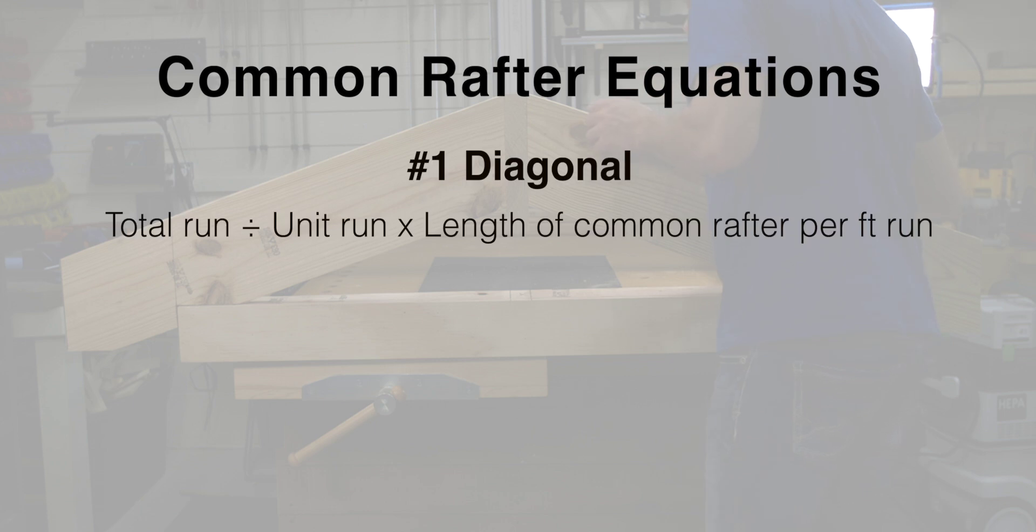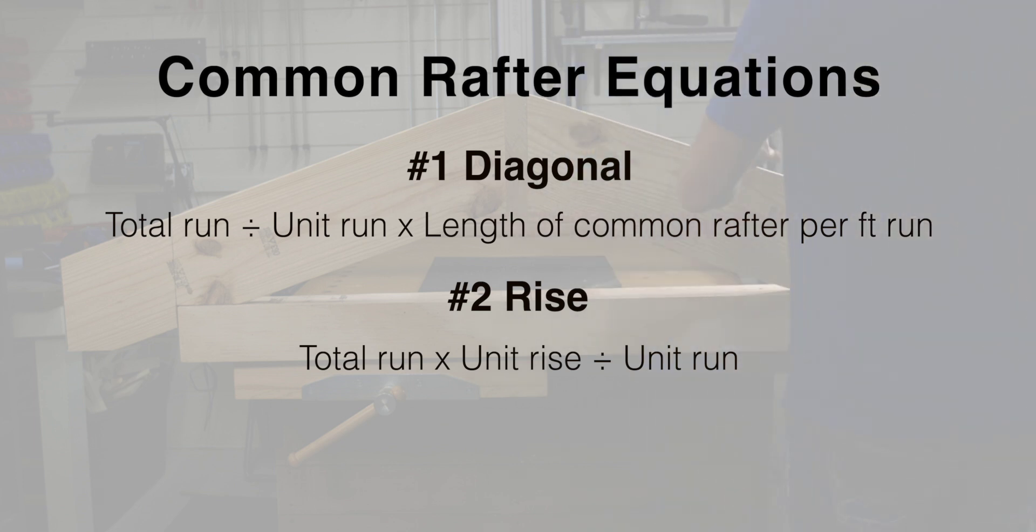In order to know the total height of a roof and the length of the rafters, you need two equations. The first equation is used to find the diagonal measurement, or the rafter's theoretical length. The second equation is used to find the rise of the rafter.